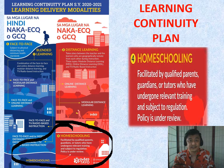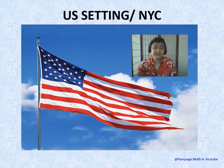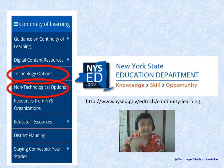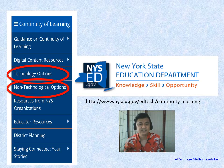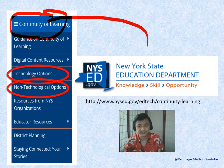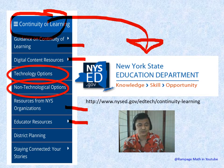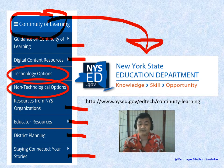In the US setting, we started remote teaching since March — it was sudden and unplanned. The New York State website has a continuity of learning section with guidelines for schools, including technology options and non-technology options. If you're a supervisor, dean, or school leader, you might want to look into this and use some of the resources there.